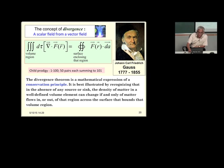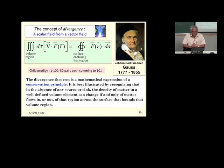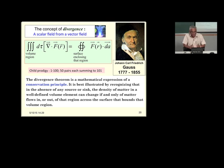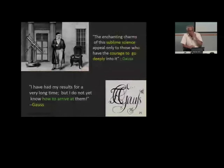Let us go to divergence. Before talking about divergence, we will understand it conceptually, write the expressions, and talk about its physical meaning. The divergence theorem I am going to describe is a mathematical expression of the conservation principle. It is best illustrated by recognizing that in the absence of any source or sink, the density of matter in a well-defined volume can change if and only if matter flows in or matter flows out.